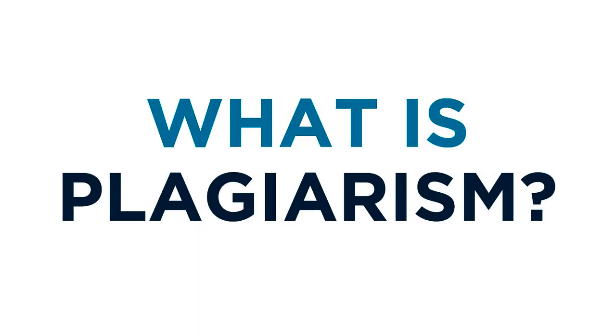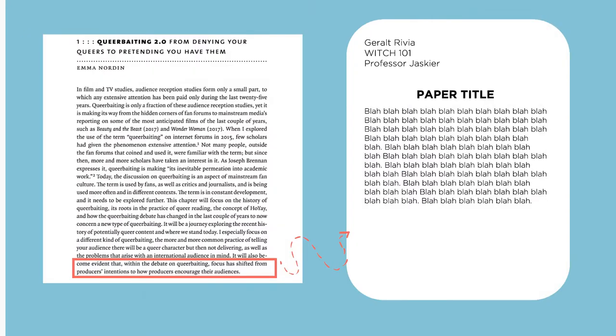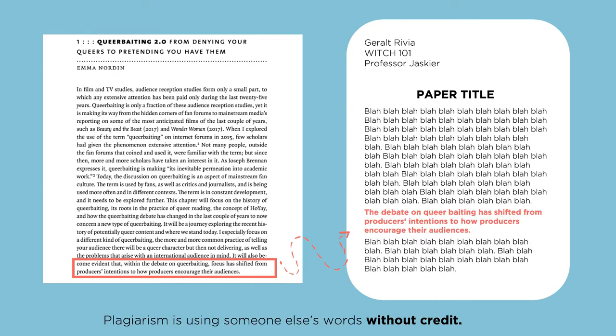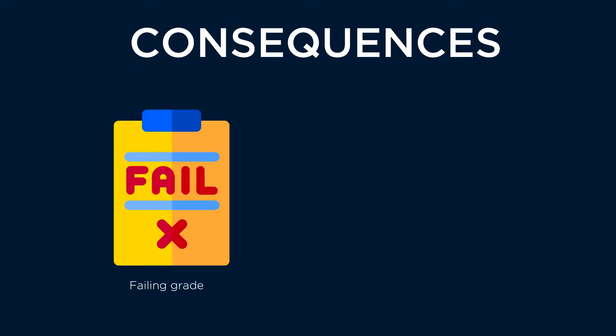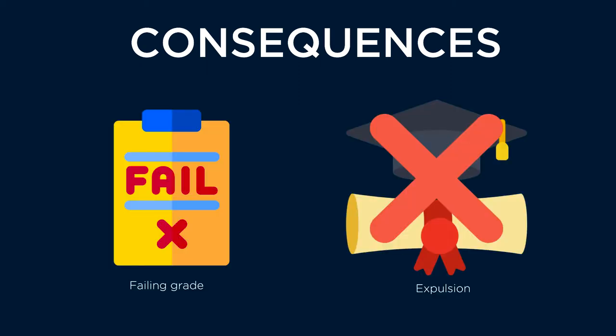What is plagiarism? Plagiarism is essentially using someone else's work as your own without giving them proper credit. Whether intentional or unintentional, plagiarism at USU can result in a failing grade in the course or even expulsion from the school.